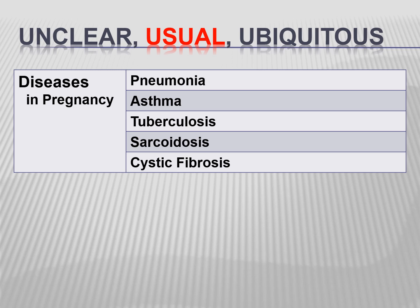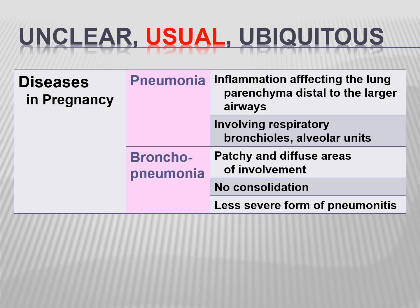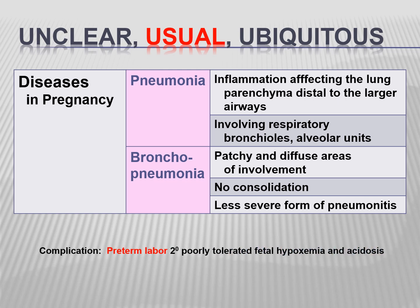These are the usual diseases in pregnancy. Pneumonia is inflammation affecting the lung parenchyma distal to the larger airways, involving respiratory bronchioles and alveolar units. Bronchial pneumonia is patchy with diffuse areas of involvement, no consolidation, and is a less severe form of pneumonitis. Any infection may cause preterm labor secondary to poorly tolerated fetal hypoxemia and acidosis.